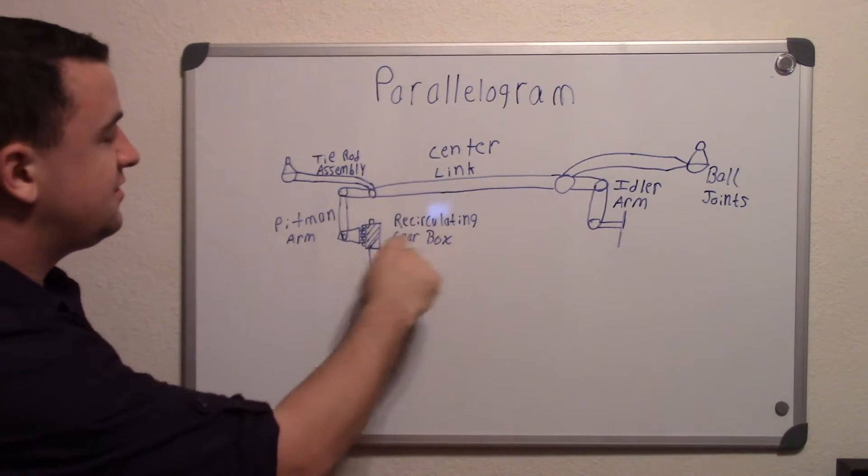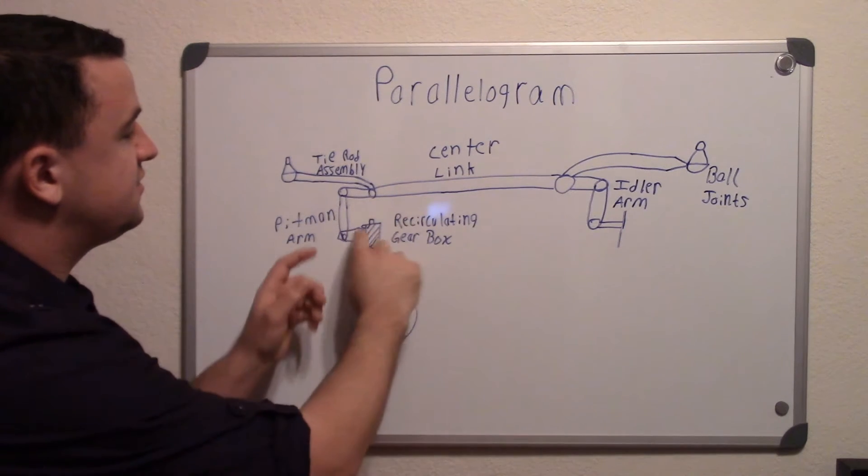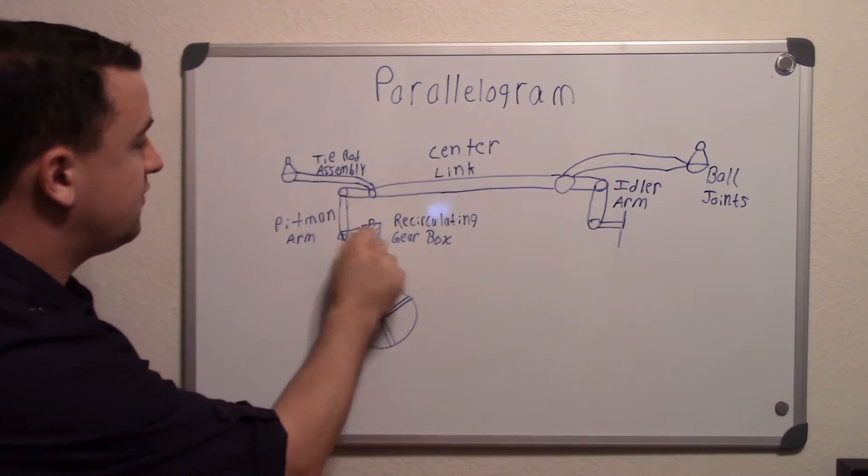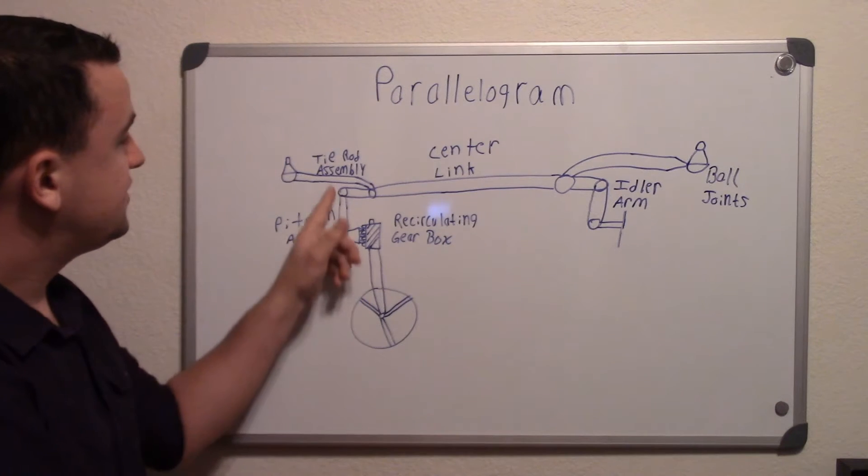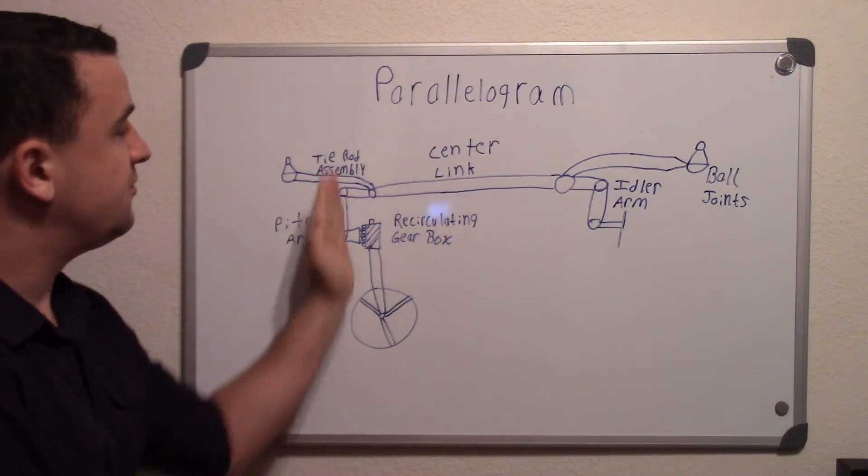Through different gears and motions, it transfers the movement over here, which then causes this Pittman arm right here to move up and down.